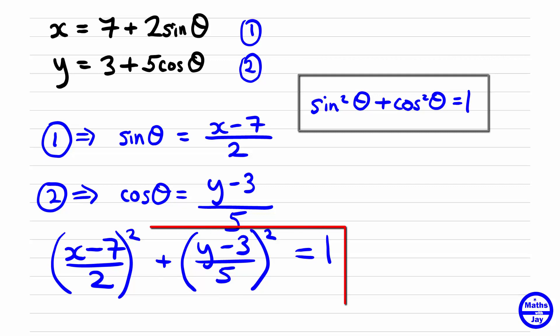So you might like to write this as x minus 7 all squared over 2 squared or over 4 plus y minus 3 squared all over 25 or 5 squared equal to 1. You may even want to multiply both sides by 4 times 25 by 100. But we have, at this stage, eliminated the theta from the equations. We've got a Cartesian equation. And you might like to think about what would the graph look like?